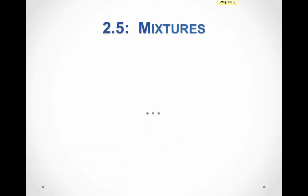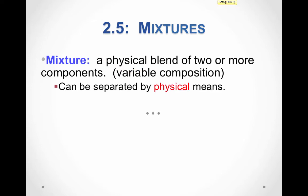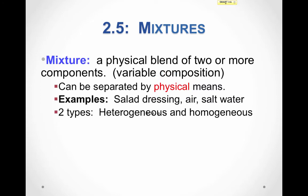Now let's look at the other major category — mixtures. Mixtures are a physical blend of two or more components with variable composition. They can be separated by physical means, unlike pure substances. Examples include salad dressing, which is a mixture of oil, vinegar, and seasonings; air, which is a mixture of gases like CO2, water vapor, oxygen, and nitrogen; and salt water, which is a mixture of salt dissolved in water.